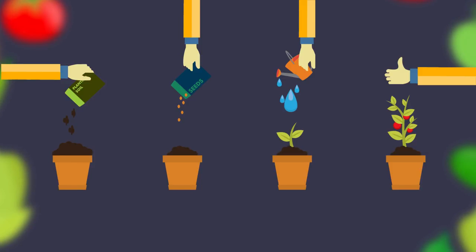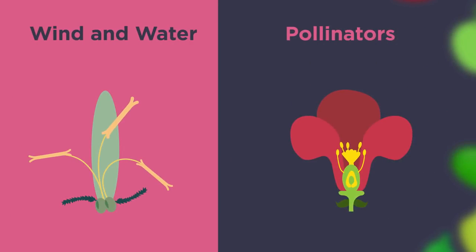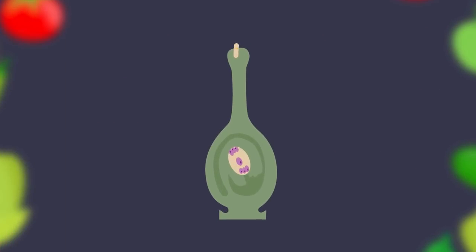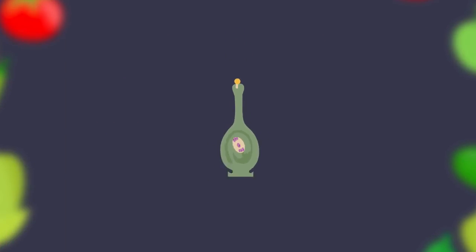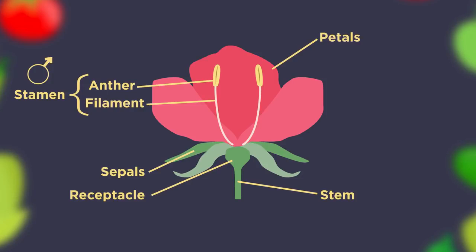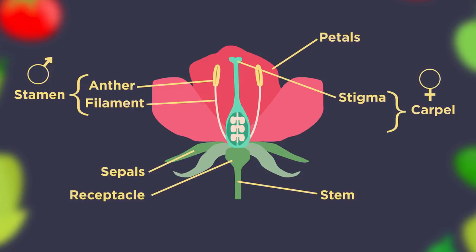So there we have sexual reproduction in plants. Pollination has to happen before fertilization. The male pollen is produced in the anther, where it is then dispersed during pollination. The female parts of the flower are the stigma, style and the ovary.